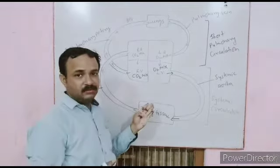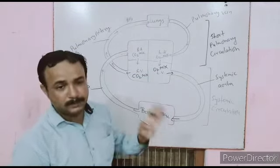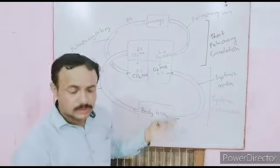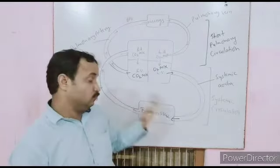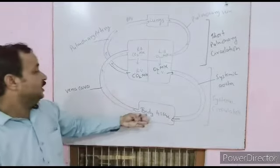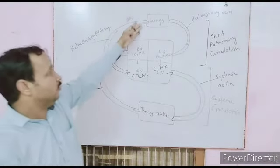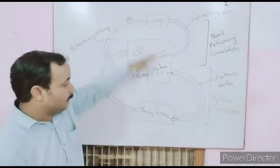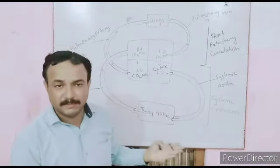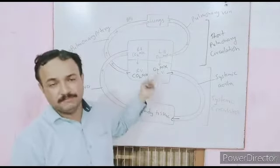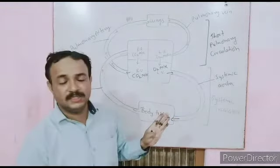When you consider the path from body tissue to the heart and back to the body tissue, because you know the location of the heart and body tissue spans the whole body, the circulation is long. So it is called long systemic circulation, while the lung path is short, giving us short and long circulation.